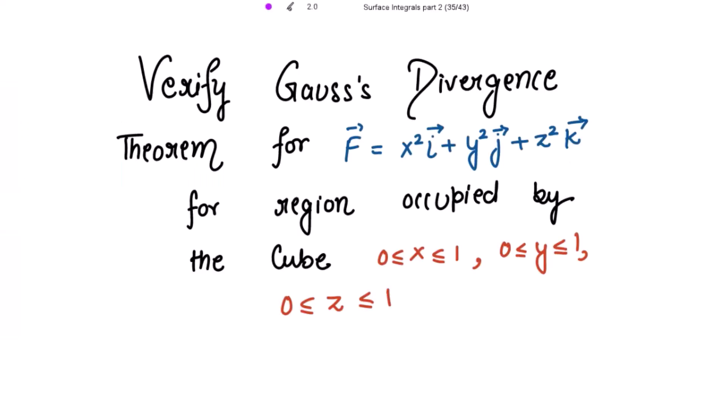Let's verify Gauss's Divergence theorem for the function f vector equal to x² i plus y² j plus z² k, for the region occupied by the cube having the limits x from 0 to 1, y from 0 to 1, and z from 0 to 1.